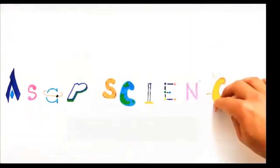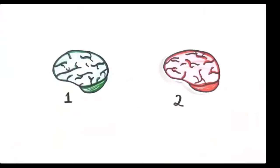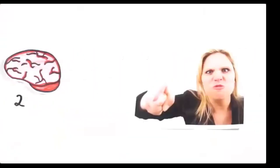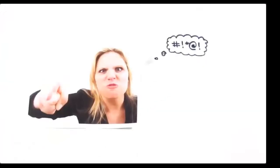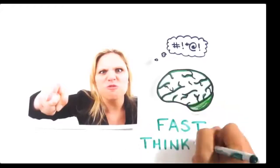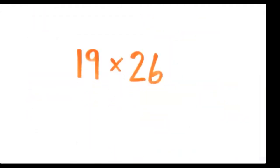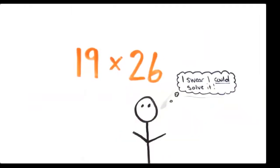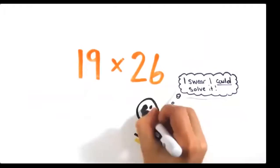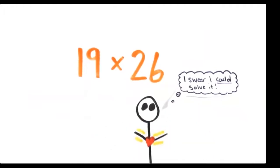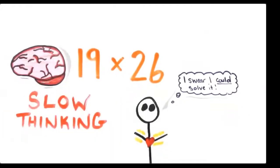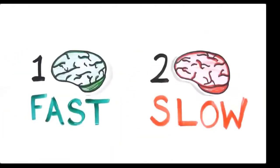Your brain actually processes information in two very distinct ways. When you look at a photo, you instantly know details like hair color and emotional expression without any effort — you experienced fast thinking. But if you look at a multiplication problem, something different happens. You immediately know it's a multiplication problem and that you could solve it, but if you do try, your muscles will tense, your pupils will dilate, and your heart rate will increase. Now you've experienced slow thinking. These two systems of fast and slow thinking dictate much of our perception and reaction in life.